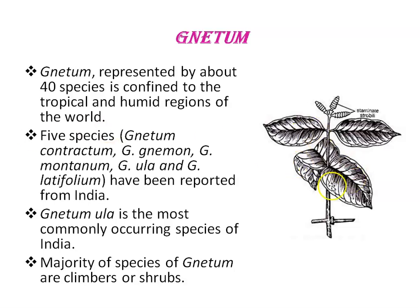This is a twig of Gnetum. Gnetum has roots, stem and leaves. Five species — Gnetum contractum, Gnetum gnemon, Gnetum montanum, Gnetum ula and Gnetum latifolium — have been reported from India. Gnetum ula is the most commonly occurring species in India. The majority of the species are climbers and shrubs.